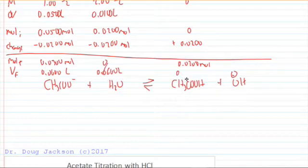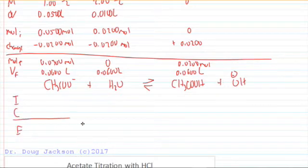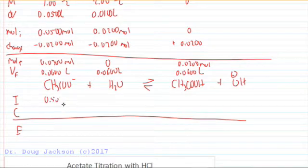We've got a new volume of 0.0600 liters because we added 50 milliliters to 10 milliliters. When we divide moles per liter, we can get our initial concentration for our ICE table of 0.5 molar in acetate. We don't have to worry about H2O. 0.02 divided by 0.06 is one-third or 0.3 repeating for our conjugate acid, acetic acid.